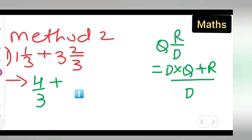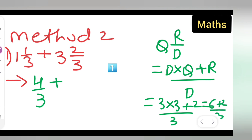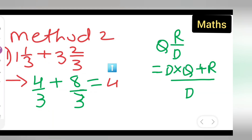Now apply the same method to the second mixed fraction, three and two-upon-three: three multiplied by three plus two upon three. That gives six plus two upon three, which equals eight-upon-three. So you now have four-upon-three plus eight-upon-three.